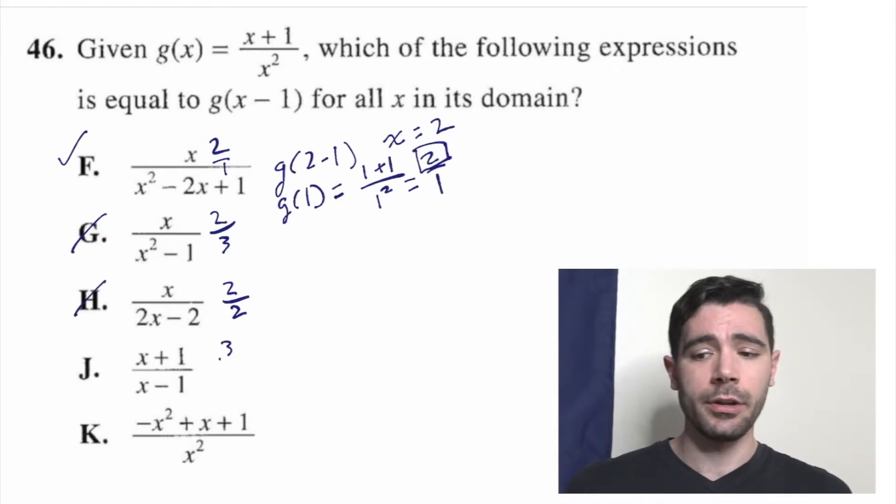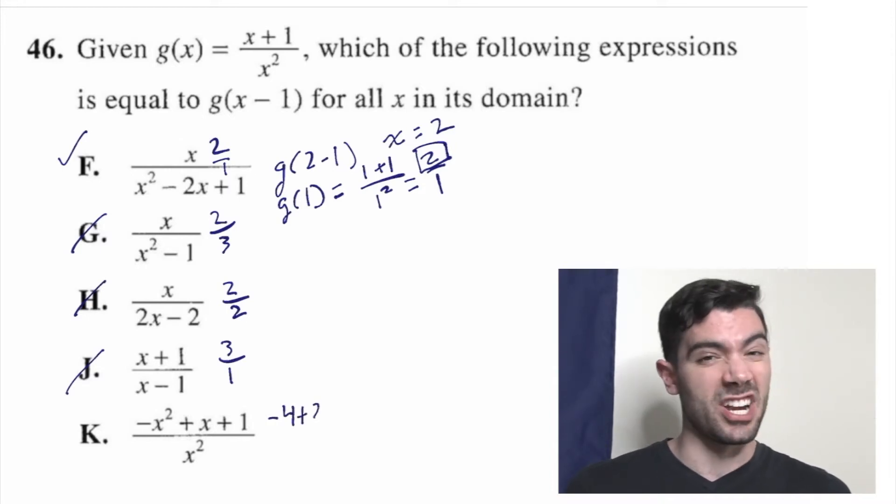J gives us (2+1), 3 over (2-1), 1. 3 over 1 is 3, still not 2. Goodbye, J. And K. Negative x squared, so that's negative 4 plus 2. So now we're at (negative 2 plus 1), negative 1 over 2 squared. So negative 1 over 4. Not at all.